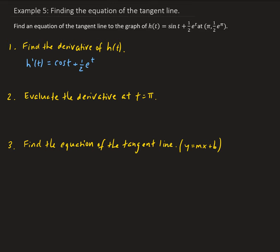So that's the derivative of our function. Now we evaluate the derivative at t equals pi: h prime of pi equals cosine pi plus one-half e to the pi. Cosine pi is negative one, so we have minus one plus one-half e to the pi. That is our slope — the slope of the tangent line at pi.